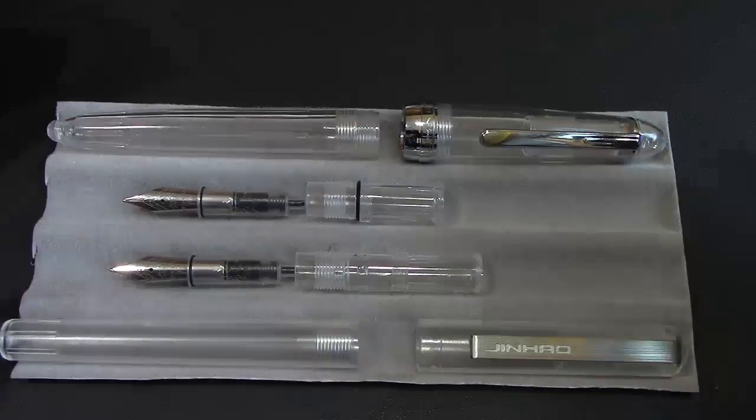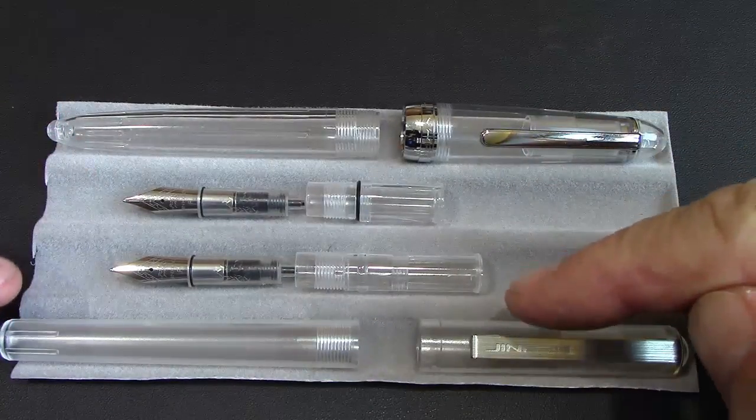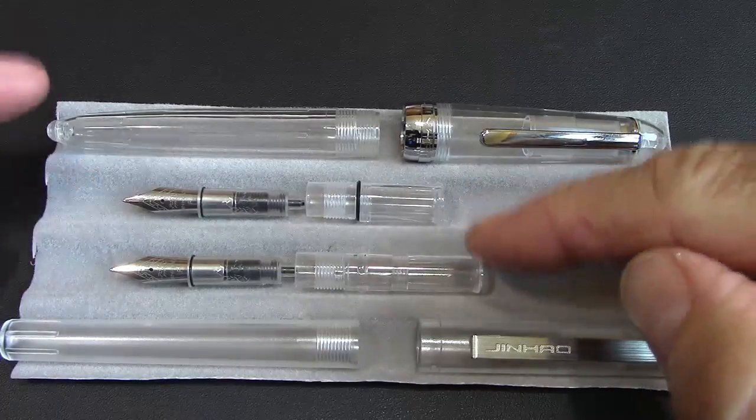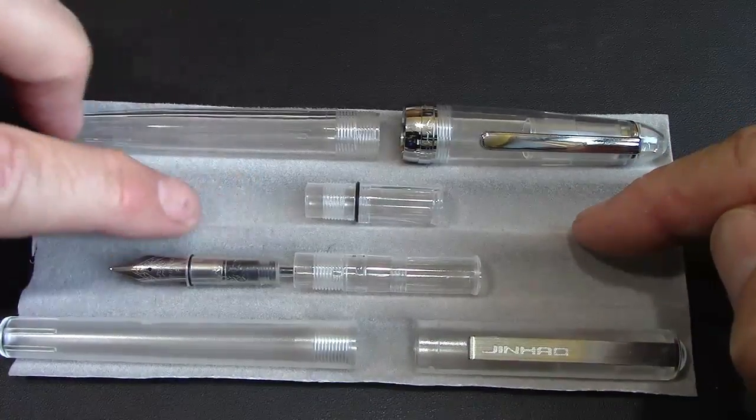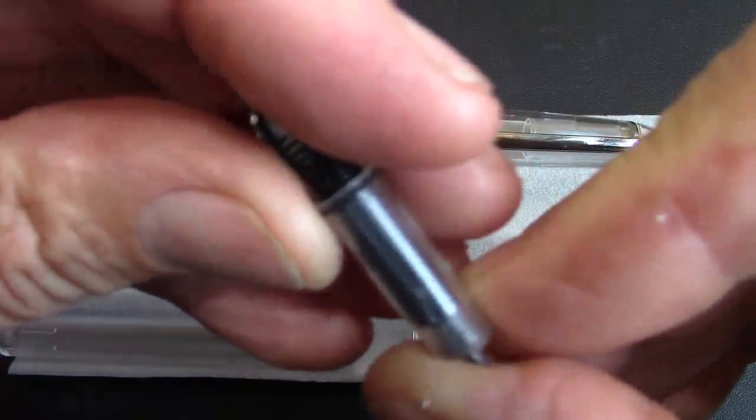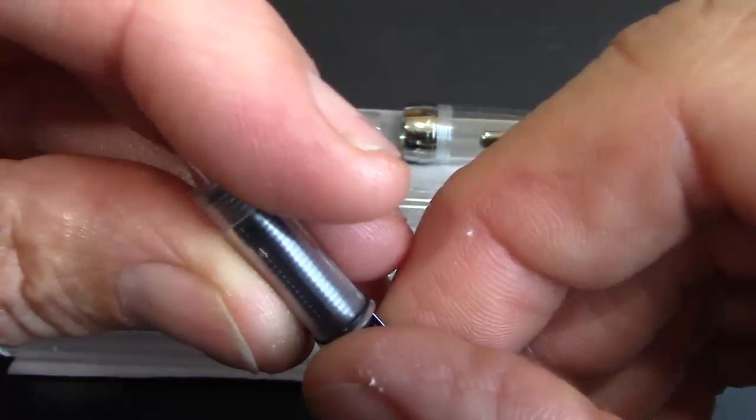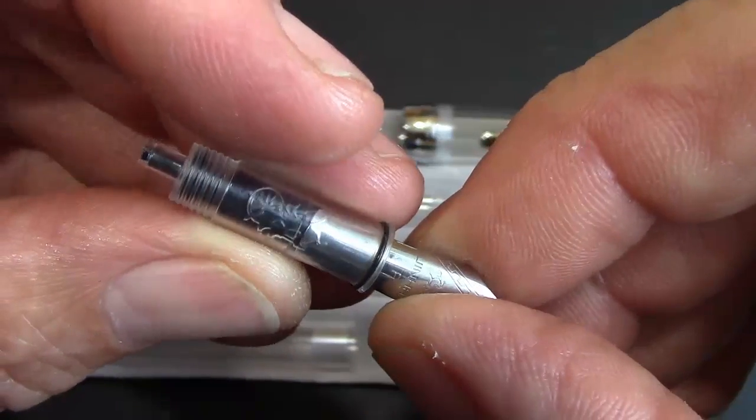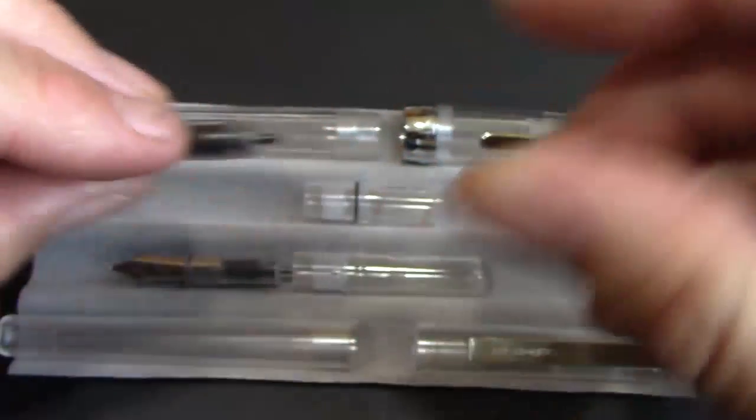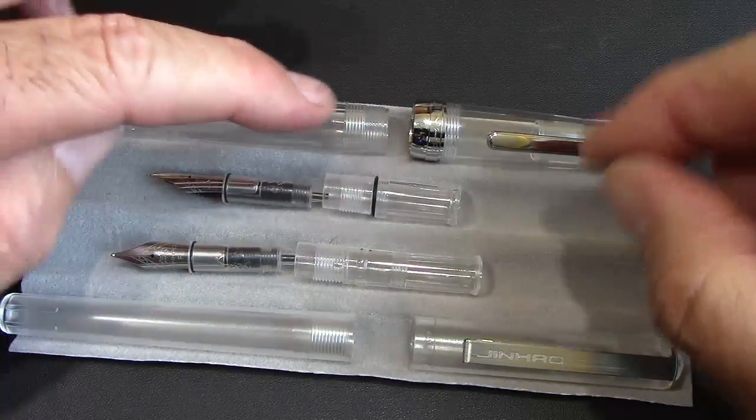So here we have the totally clear 992, crystal versus the matte 991. The sections are different. The whole thing is different, but the nib is the same. But I noticed one difference when I took this apart that I hadn't noticed before. On the back of this is the number 4 instead of the number 5. So obviously not designating nib size because the nibs are the same on these. And the same logo that's in that nib assembly.